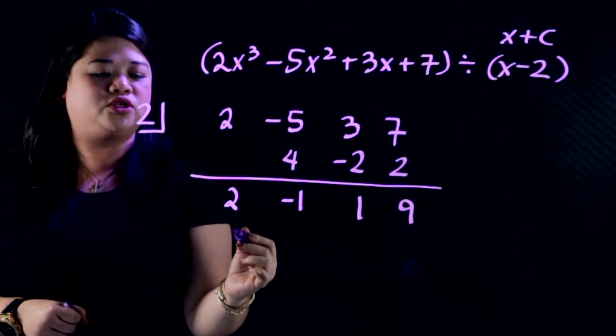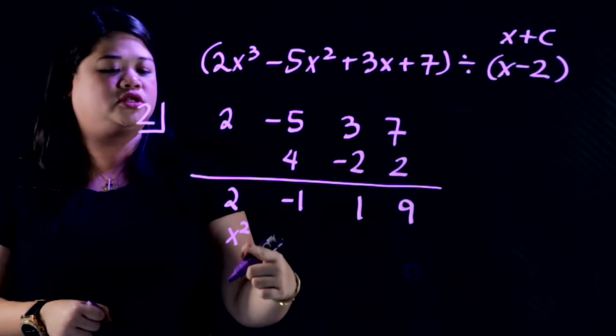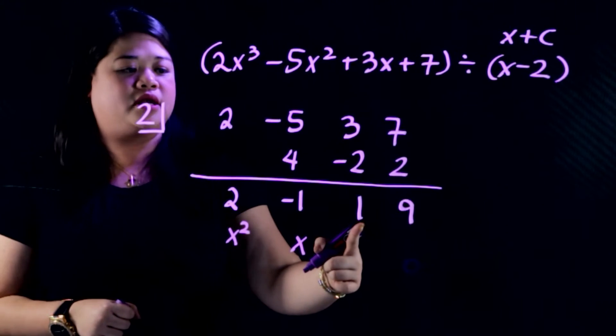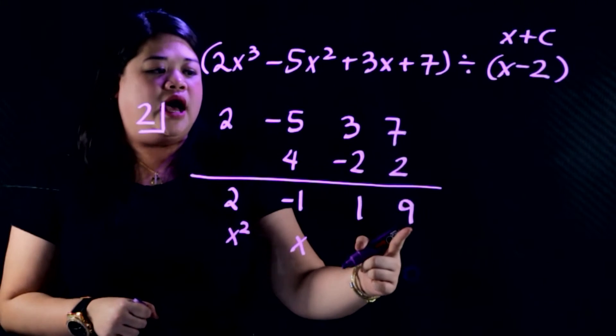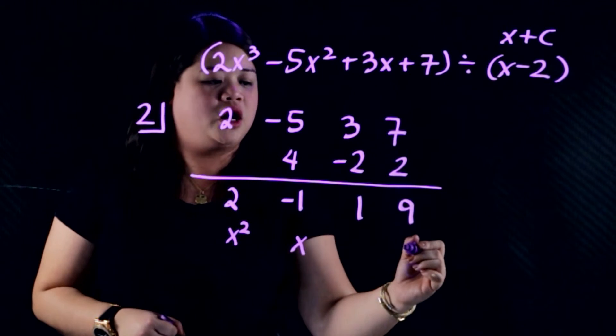So this is x cubed. This will take x squared. Ito ay x squared. So magiging x na lang ito. Ito yung para sa constant natin. Anong ibig sabihin ng 9? The 9 here will serve as your remainder.